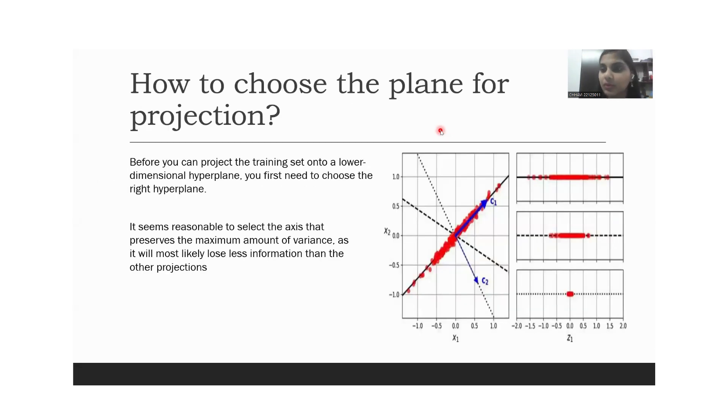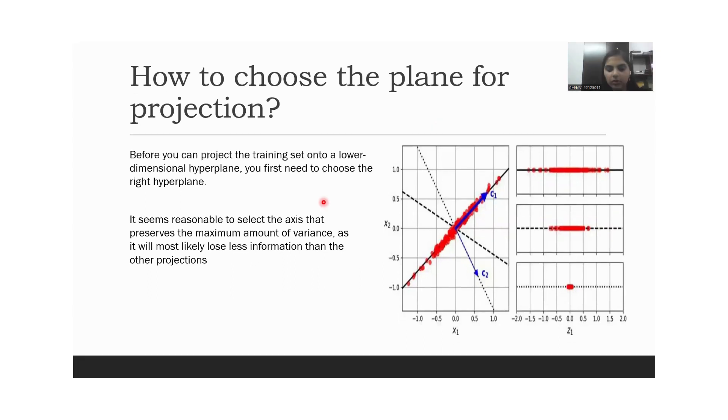So how do we choose this plane? Our goal is not to lose any information. To do so, we will choose the axes which conserve most of the variance. So here as you can see in the picture, C1 conserves most of the variance. So we will choose C1 as our first axis for the PCA.